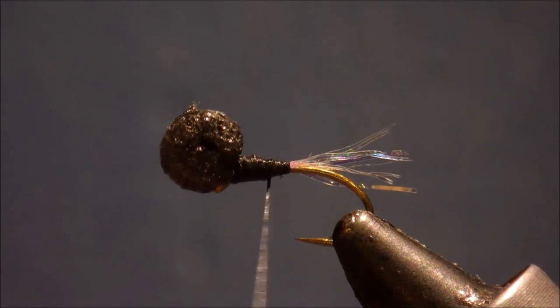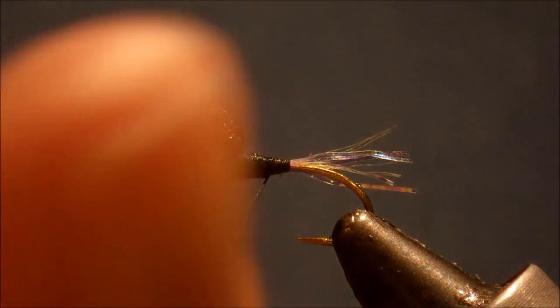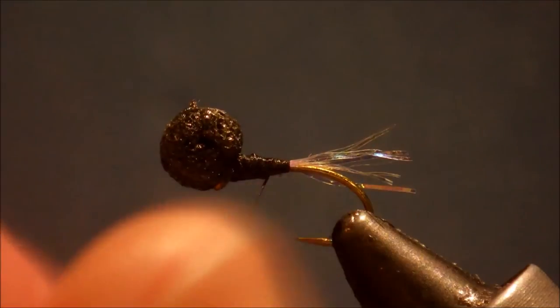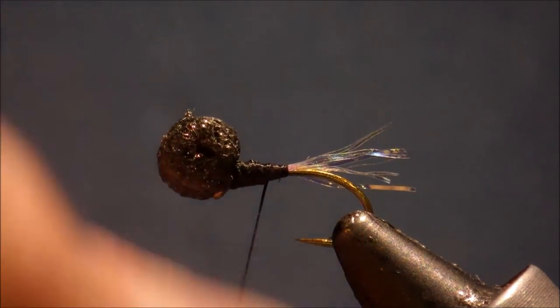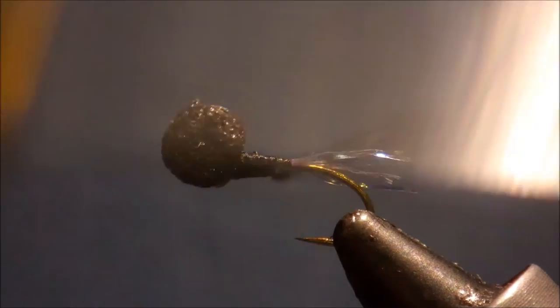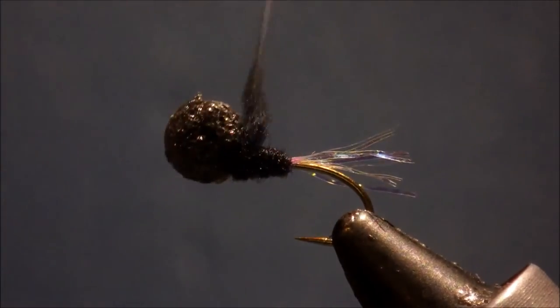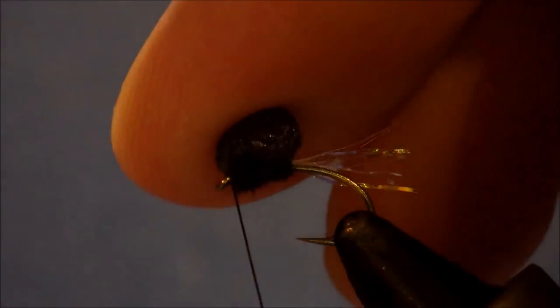So, the last stage in this is just a wee bit of black dubbing. Anything you like - I'm using superfine possum, rabbit, whatever black dubbing you have to hand, it makes absolutely no difference. And then just wind a wee short body, let it taper a wee bit at the front, and that's it.